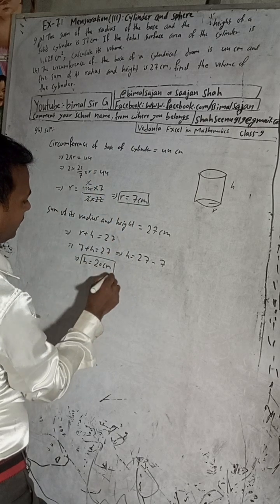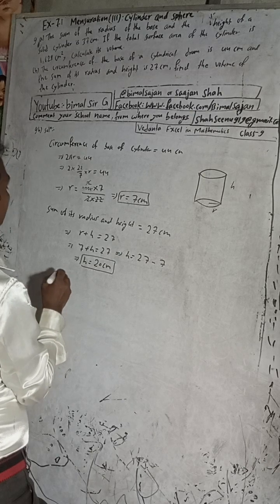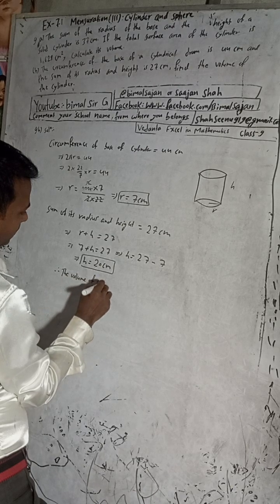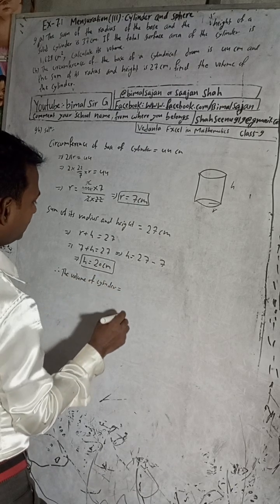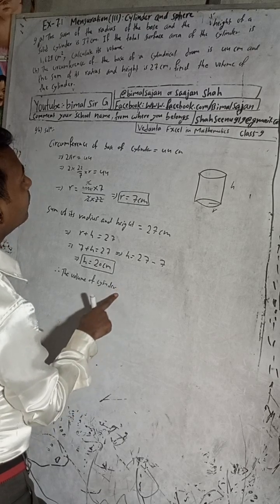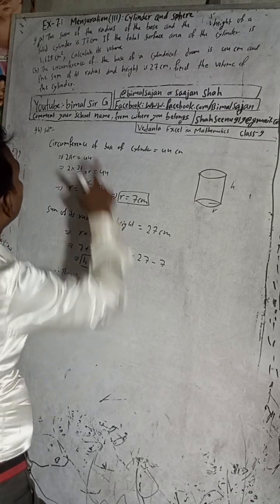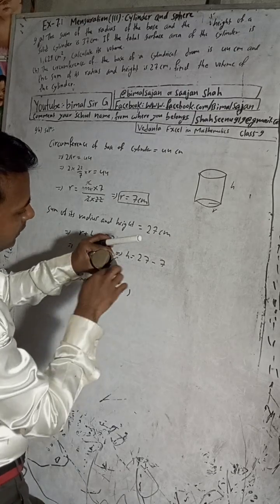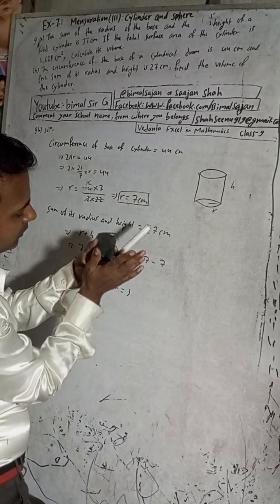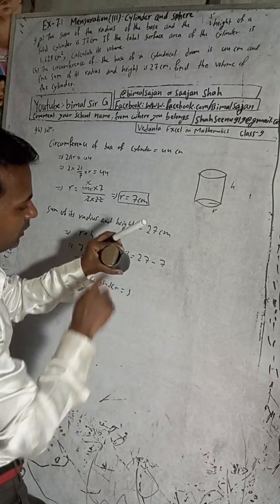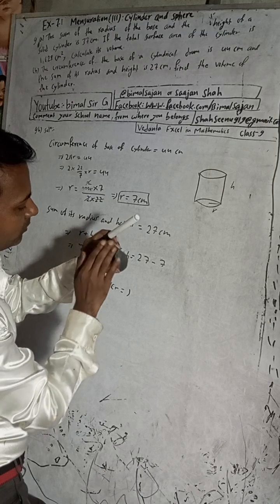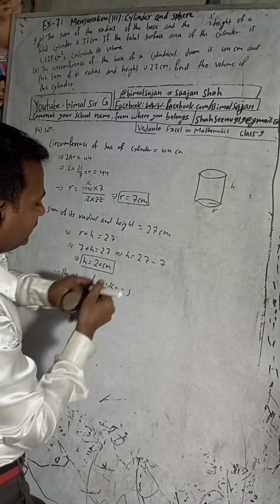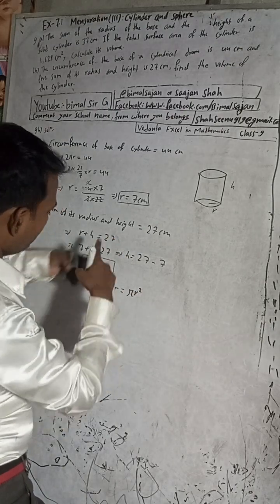Now, find the volume of the cylinder. The volume of a cylinder equals the area of the cross-section into the height. The base is a circle, so the cross-sectional area is πr². When you cut the cylinder, you get the same circle each time.